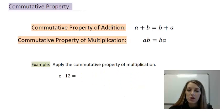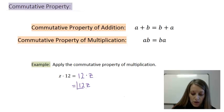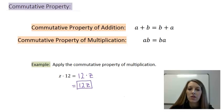An example of this that you might see on the homework. It says apply the commutative property of multiplication and it has Z times 12. All you need to do is rearrange this. So you can write this as 12 times Z, but most of the time we would just write it as 12Z. So 12Z would be the best final answer here.